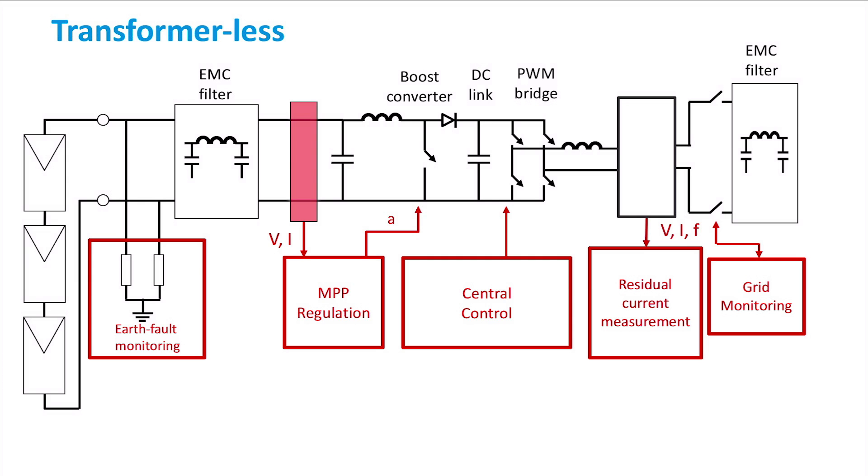Another filter is present at the grid side. As for the EMC filter at the DC part of the inverter, this filter is used to make sure that neither the grid nor the PV array see any high frequency distortion in the power signal.